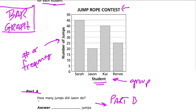First, let's find out how many jumps Jason did. When you're doing this, look at the bar they give you, follow it all the way to the top — that's the height of your bar. Then look over and follow it to the left — that's the number that this bar represents. So here, Jason did 20 jumps.